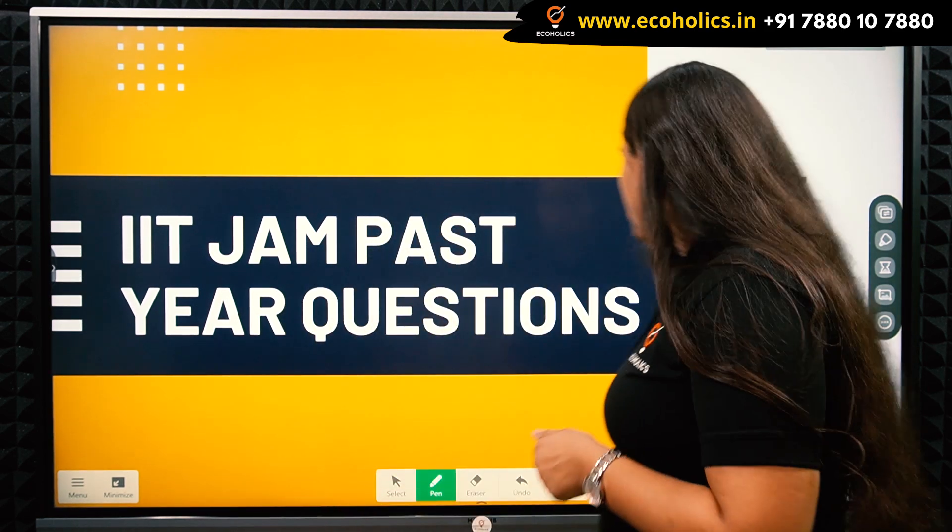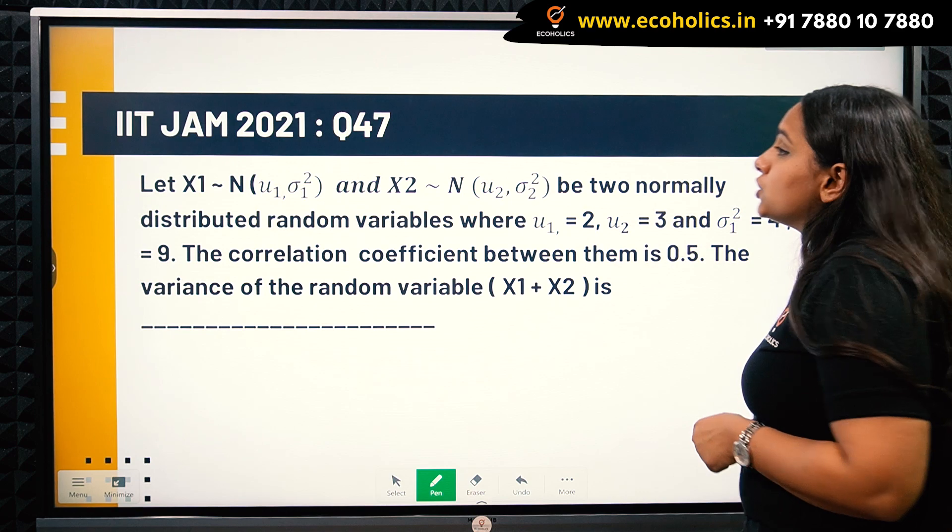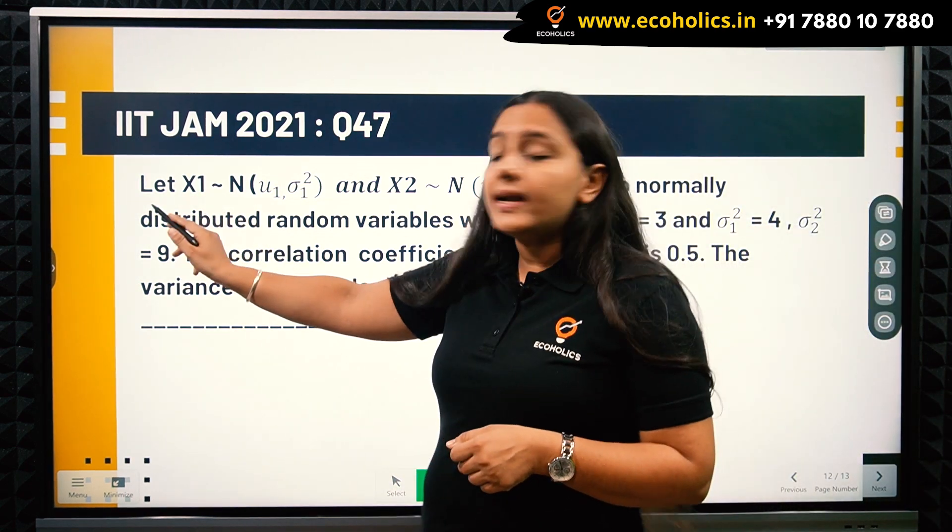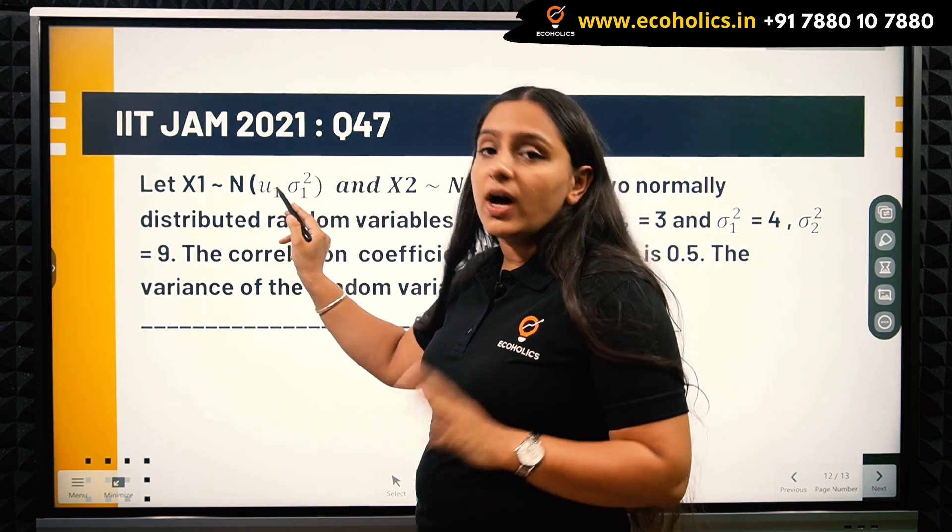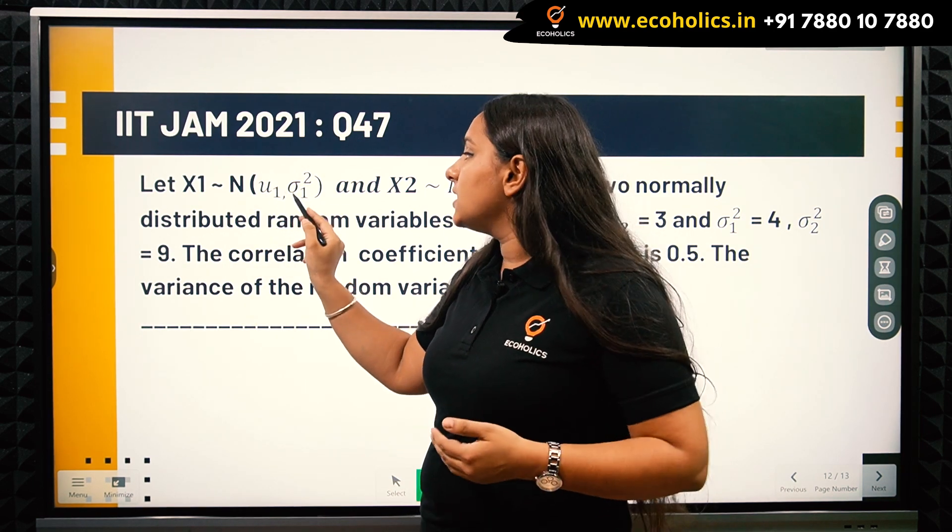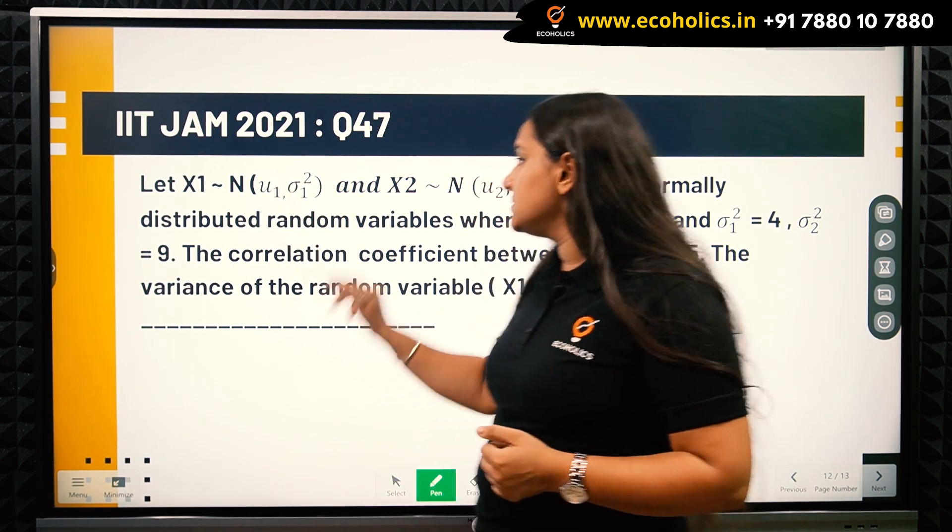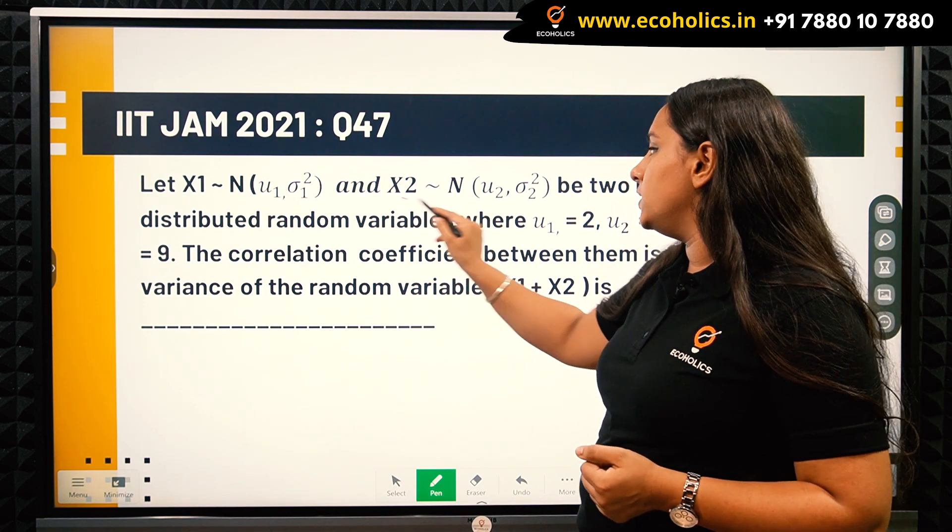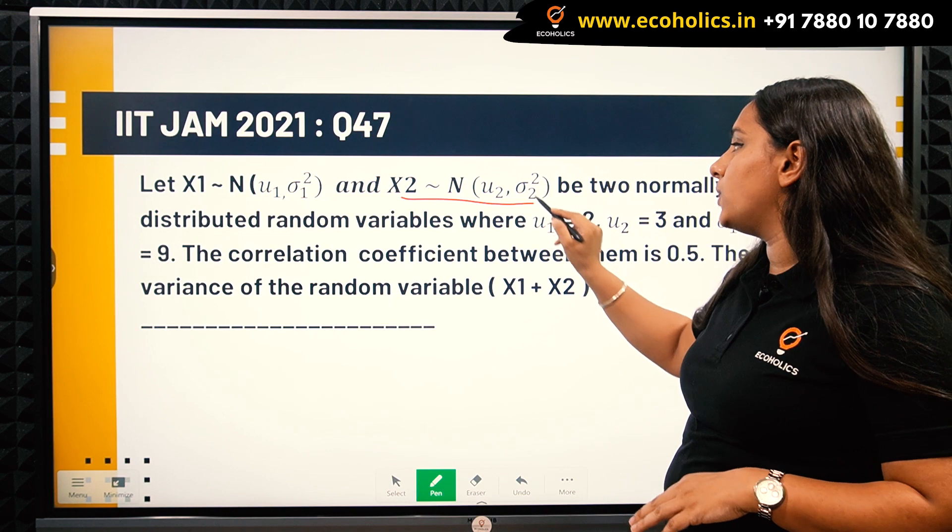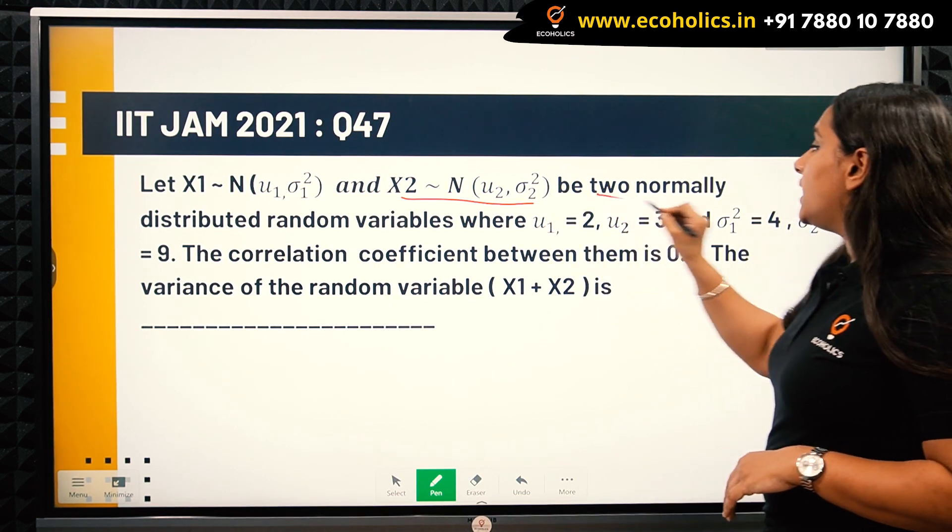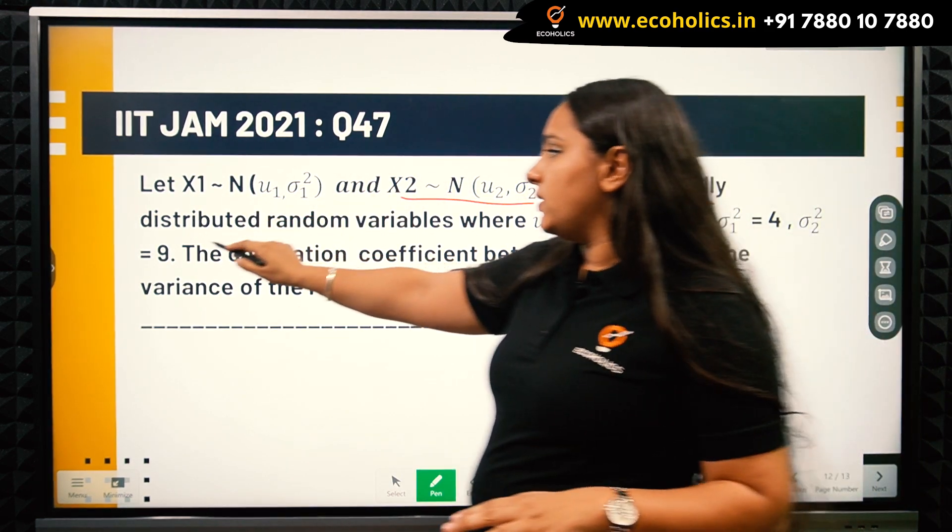In today's video, I would be doing question number 47 which appeared in IIT JAM economics paper in year 2021. The question says that let X1 follows normal distribution with mu1 as its mean and sigma1 squared as variance, and X2 also follows normal distribution with mean mu2 and variance sigma2 squared.